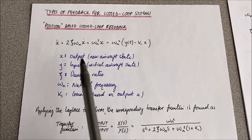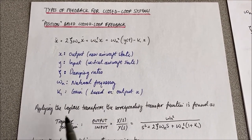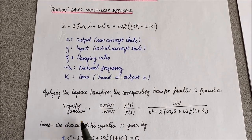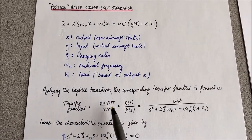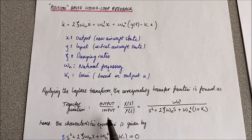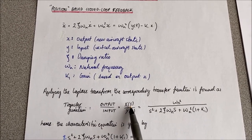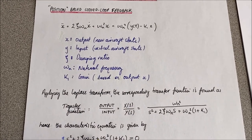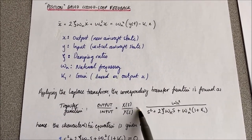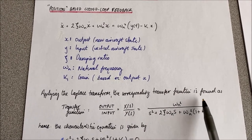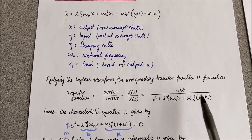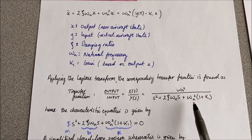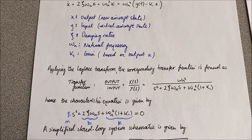If we apply the Laplace transform to that ordinary differential equation, we can find the transfer function, which is simply given by the output of the system over the input of the system — x over y, output over input — to get this transfer function. The characteristic equation is simply given by the denominator, or when the denominator is equal to zero, so we get this equation here.